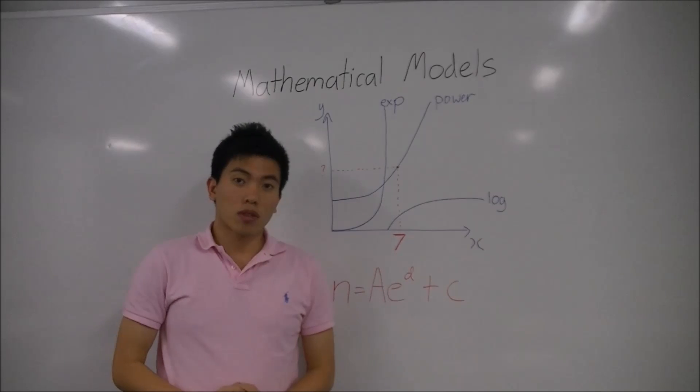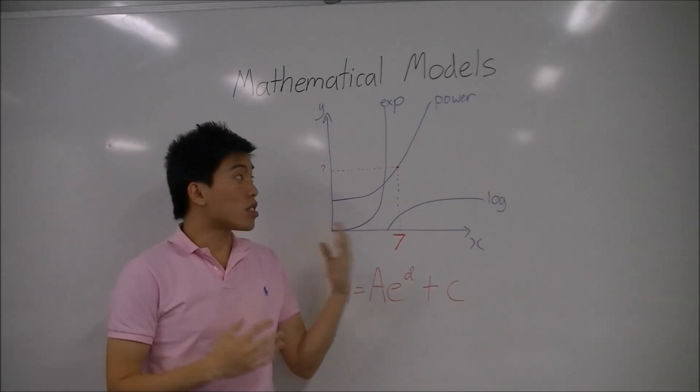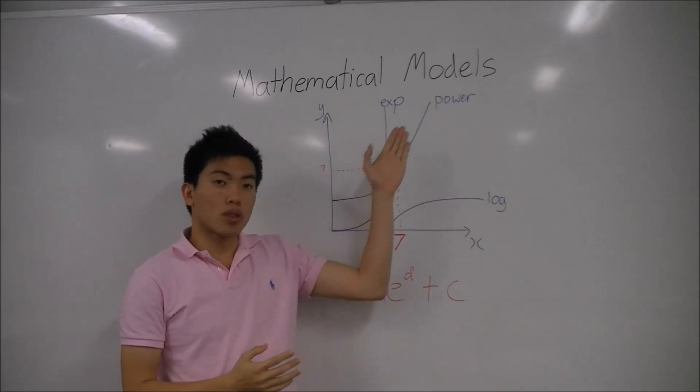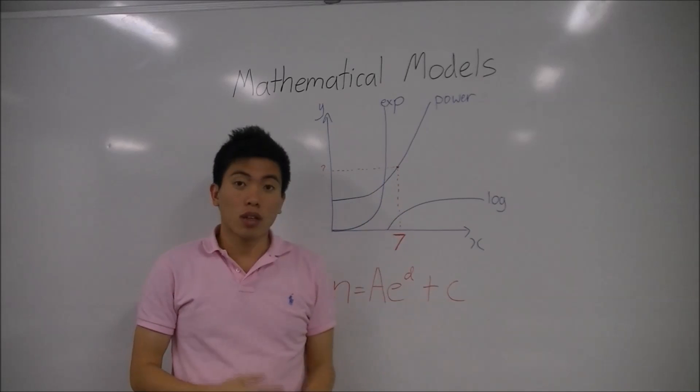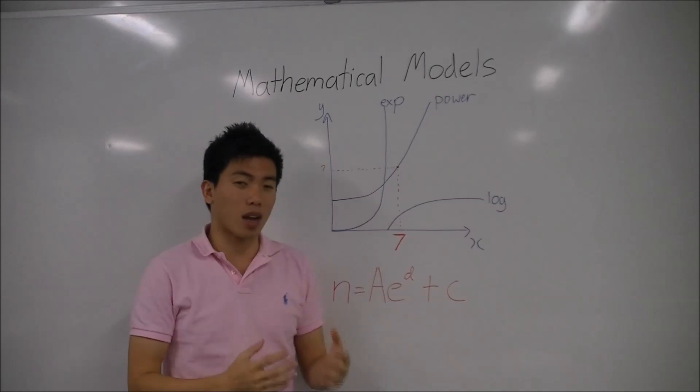Mathematical models. In a mathematical model, could you distinguish between the differences between an exponential, a power, a logarithmic, and any other mathematical model on a graph? Perhaps if we gave you an equation, for example. What are some of the defining characteristics of that type of mathematical model?